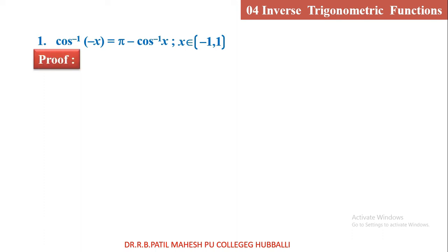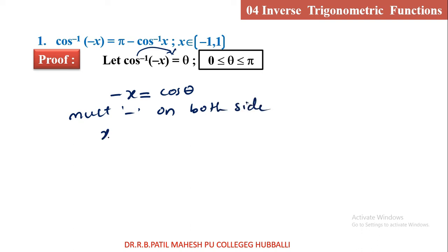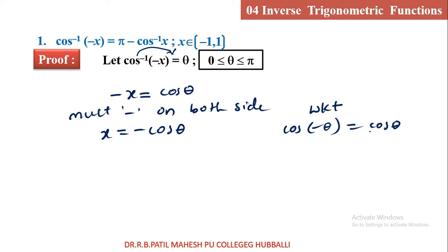The proof: let us consider the LHS, cos inverse of minus x equal to theta, where theta is in the range of cos inverse, that is 0 to pi. Follow the same technique — taking cos inverse to the right side: minus x is equal to cos theta. Multiply minus on both sides: x is equal to minus cos theta. Very important — we know that cos of minus theta is cos theta.